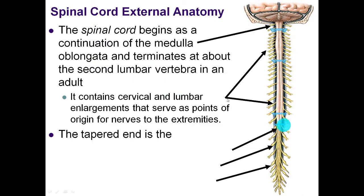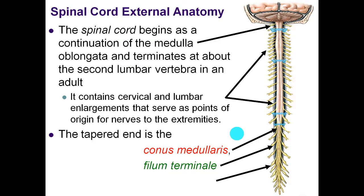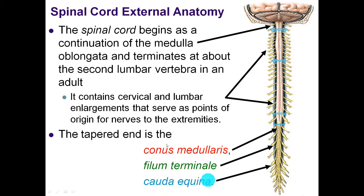The end of the spinal cord tapers off at L2 and is called the conus medullaris. Where the spinal cord pinches off is known as the conus medullaris, and that gives rise to a bunch of branches that continue down through the lumbar vertebrae and into the sacrum, called the cauda equina. This literally means horse's tail. The filum terminale are all of the pia mater branches, which fuse with the peripheral nervous system. The cauda equina are all of these branches coming off the end of the spinal cord.